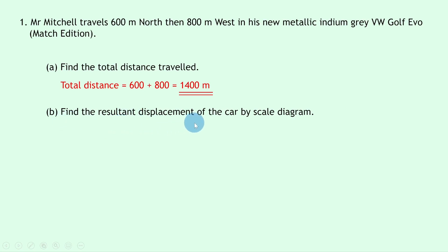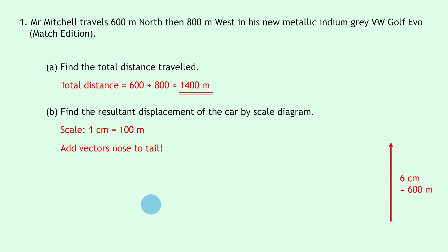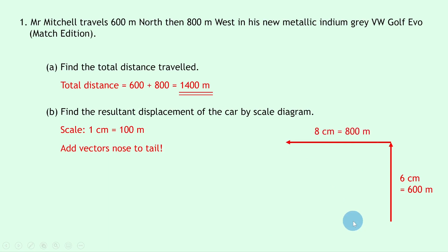Part B says find the resultant displacement by scale diagram. For the scale diagram method, start by choosing a scale. To represent 600 meters and 800 meters on the page, a scale of 1 centimeter equals 100 meters works well, giving us a 6 centimeter and an 8 centimeter line. The rule for adding vectors is nose to tail, so the first vector is 6 centimeters going north — 600 meters — then 8 centimeters going west for 800 meters.